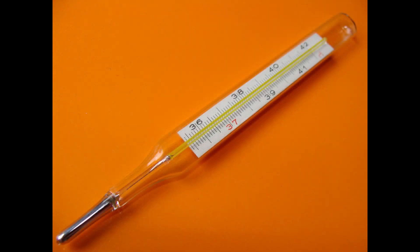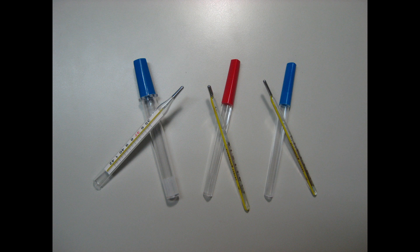At the heart of a mercury thermometer lies a simple yet effective principle, thermal expansion. Inside the glass tube, a small reservoir of mercury sits at the base. As the temperature rises, the mercury expands, pushing up the narrow column within the tube.